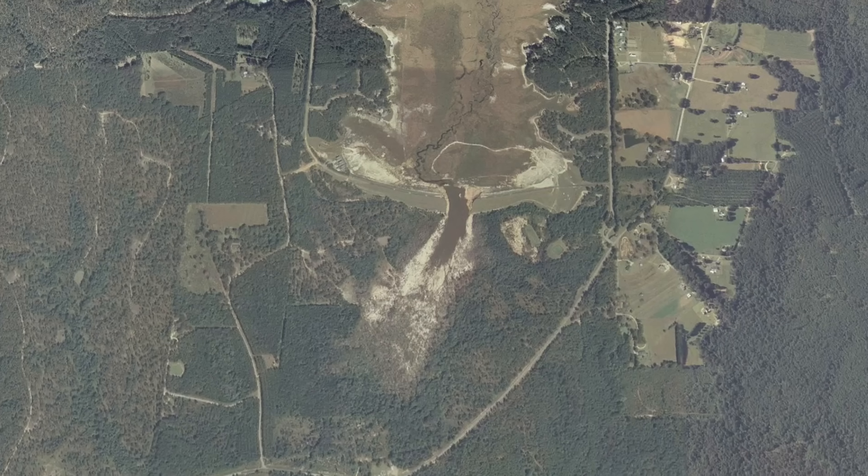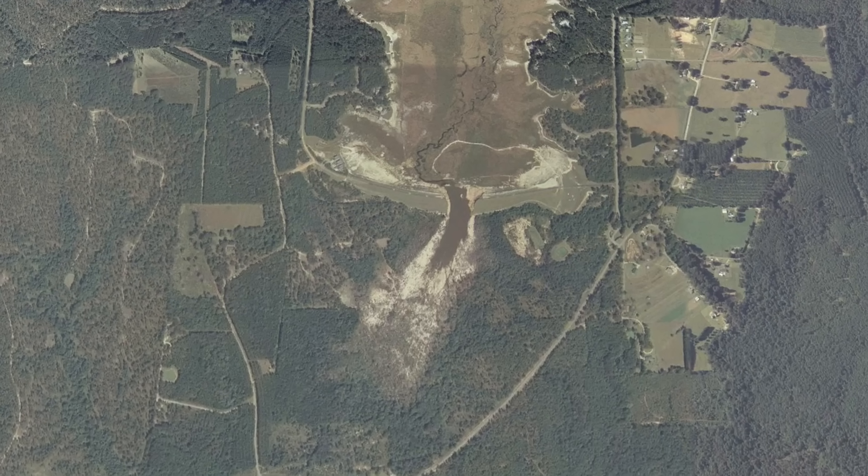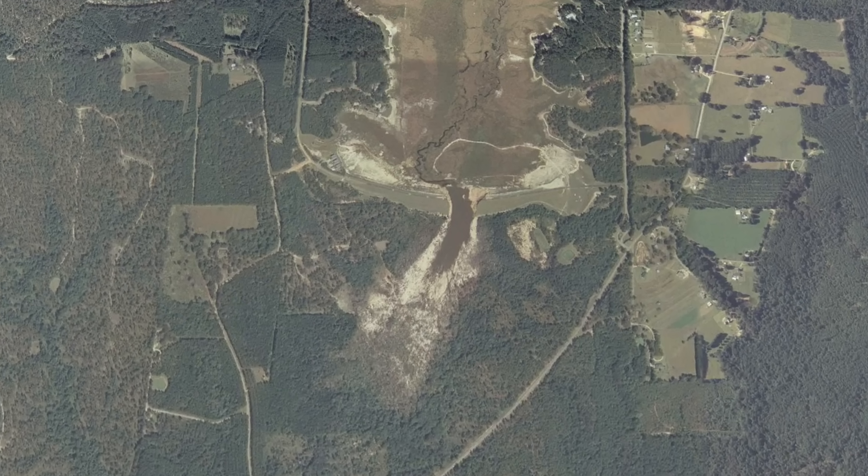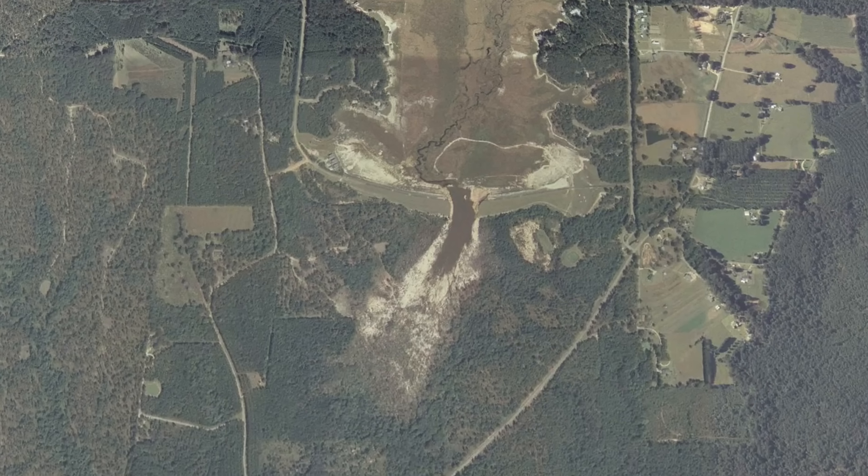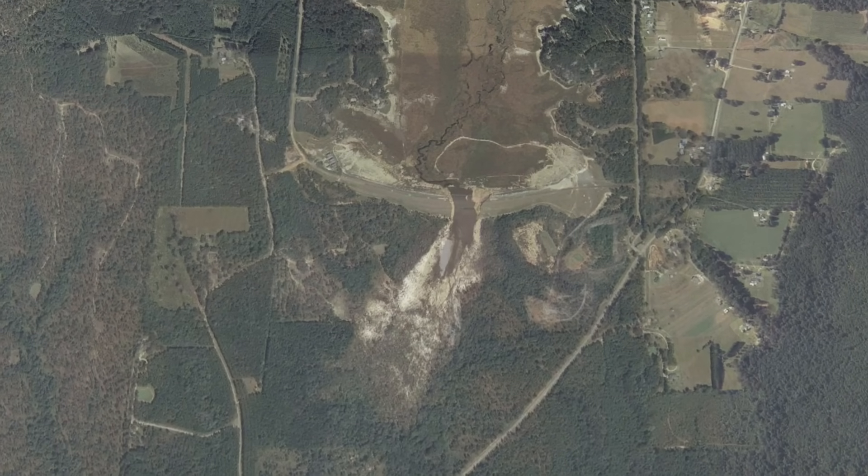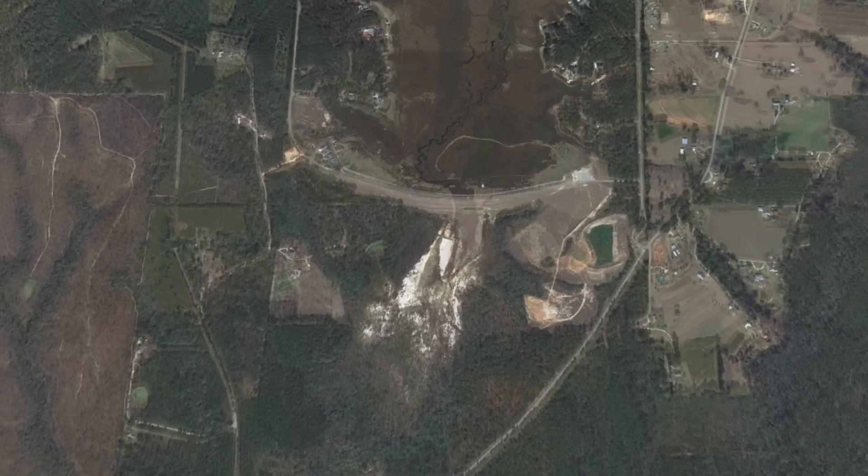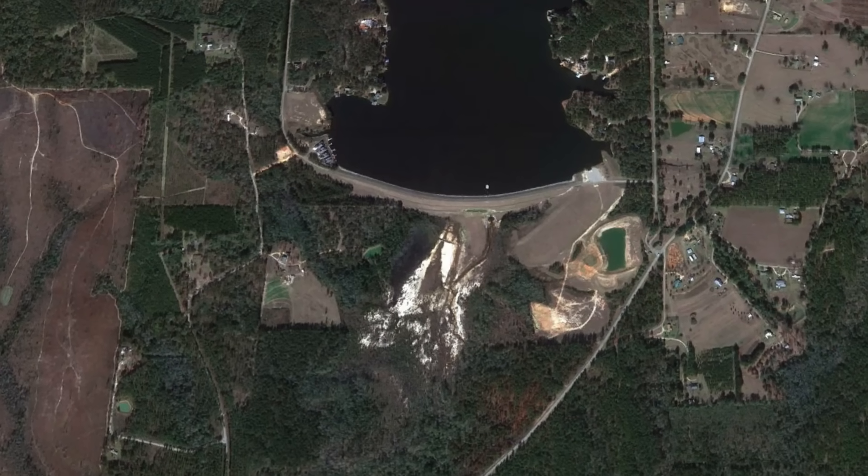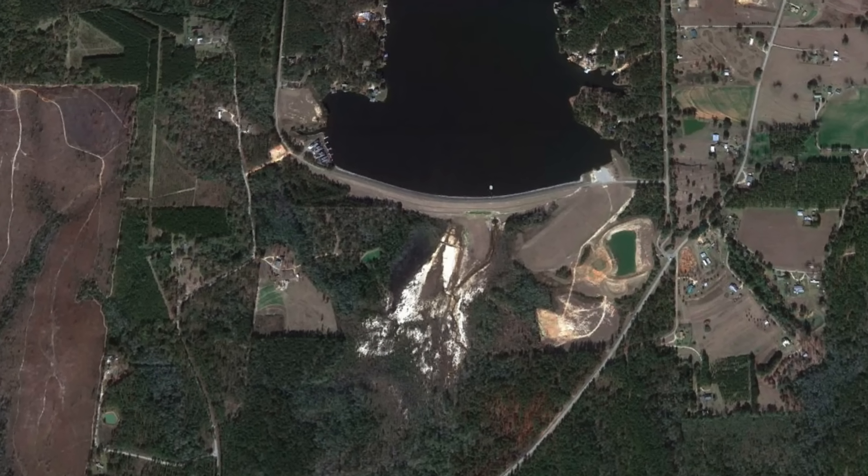Lawsuits unsurprisingly would follow, resulting in a $1 million settlement with homeowners. The dam would be rebuilt after being given approval in 2007, costing over $6 million. As we can see on Google Earth, the new dam is pretty similar to the original, albeit hopefully with better drainage and water management.